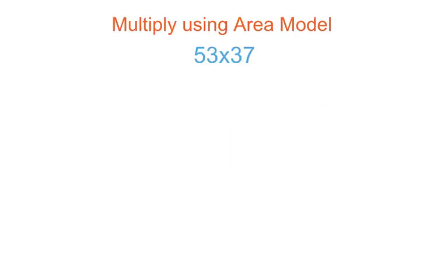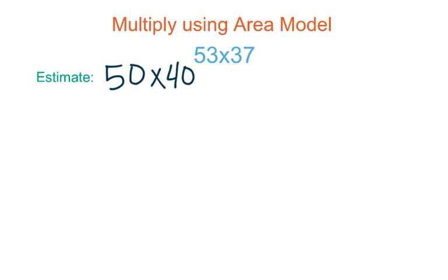We multiplied using the area model. Here we have 53 times 37. I want you to multiply using the area model, but first estimate the product. If we were estimating, 53 would be rounded to 50 and 37 would be rounded to 40, so I would multiply 50 times 40. Cross those zeros out, place them in my product — 5 times 4 is 20 — so my estimate is 2,000. Then I'm going to set up my area model. Make sure you get a product that's around 2,000.